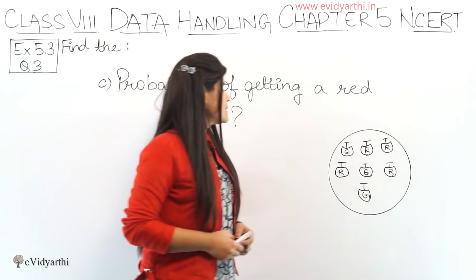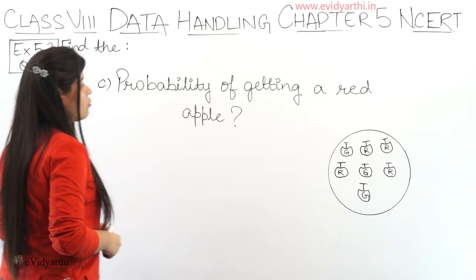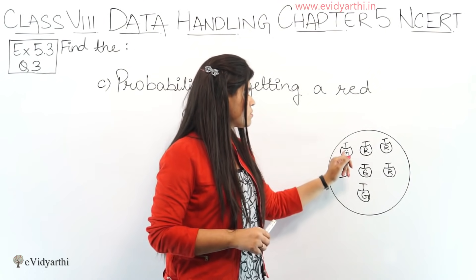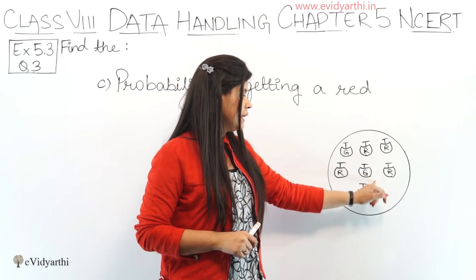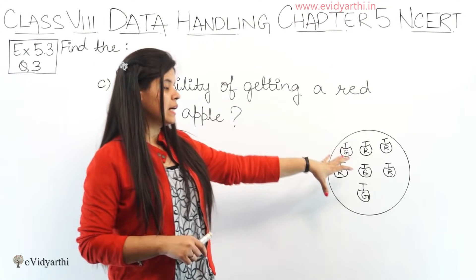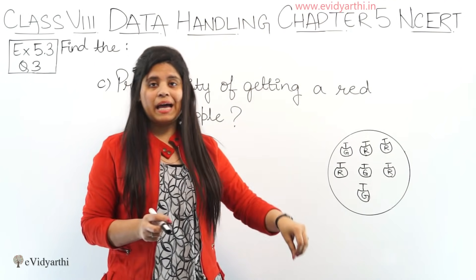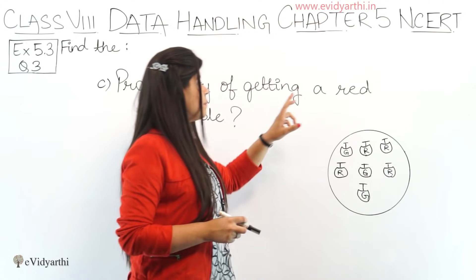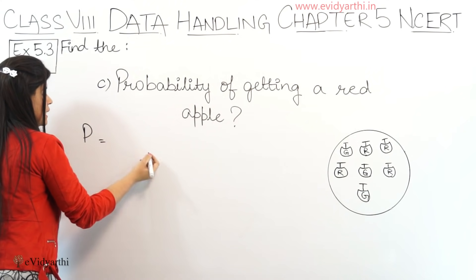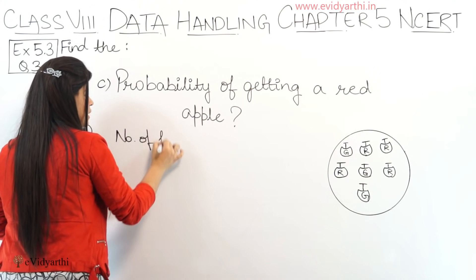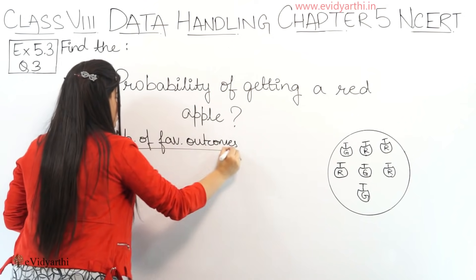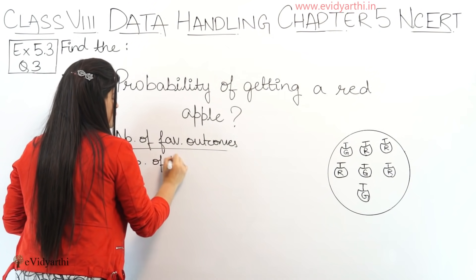So this was the B part. Now let's come to the C part. In C part, we have: probability of getting a red apple. Here you have a circle with different apples in it and colors are given — like green, red, red, red, green, red, green. The question asks: if you put your hand in and take out one apple, what is the probability that it will be a red apple? So again we will use the probability formula: number of favourable outcomes upon number of total outcomes.